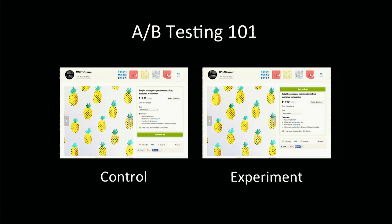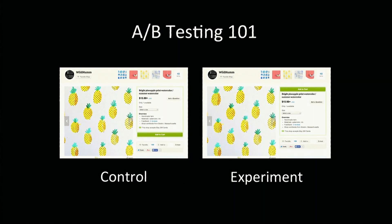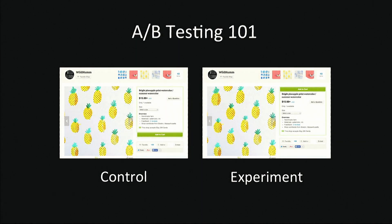The term we use is bucketing — we bucket people into our experiment. Say 10% of visitors who come to our site, we'll show them the new version instead of the control. We'll run it for a while and see which one does better. What's interesting is not just whether people push the button more — we can also test our implementation. Maybe we had a bug and it just didn't work, so in the experiment we'd see nobody buy anything.